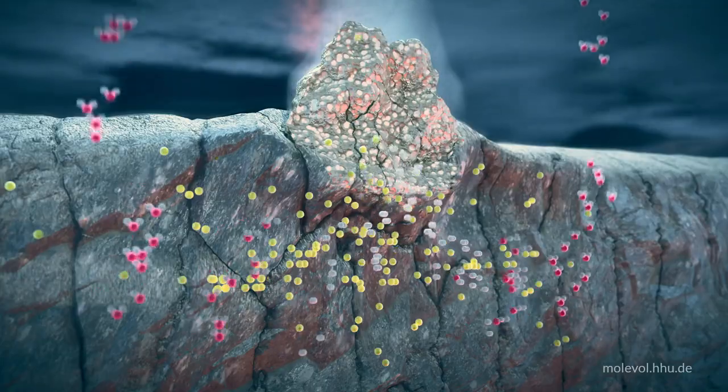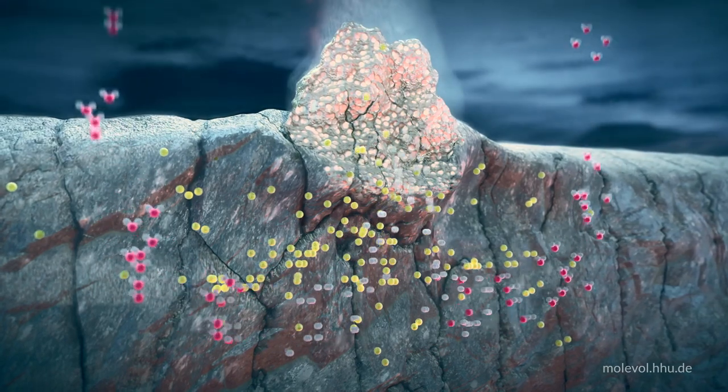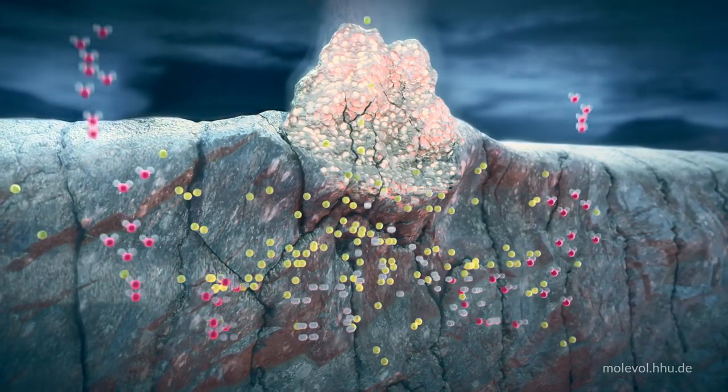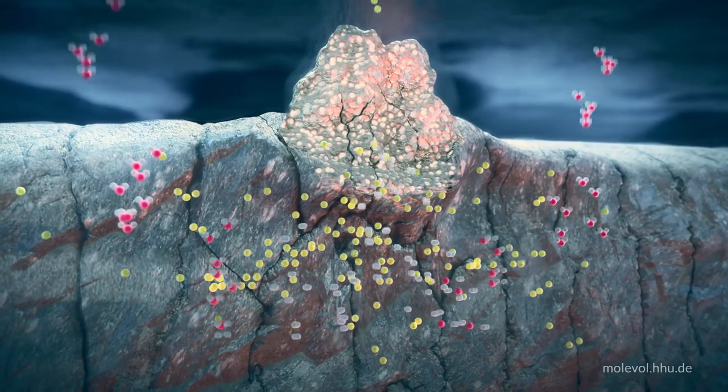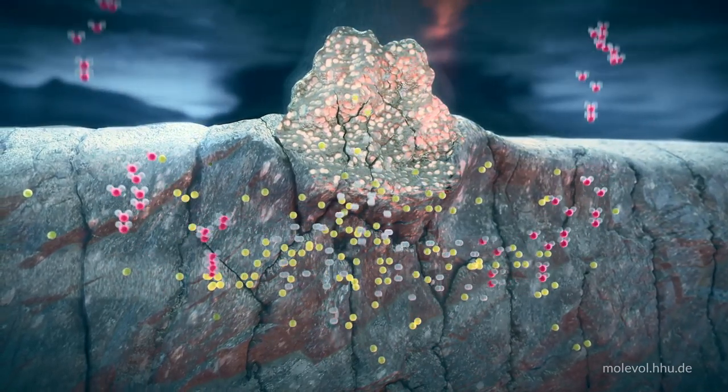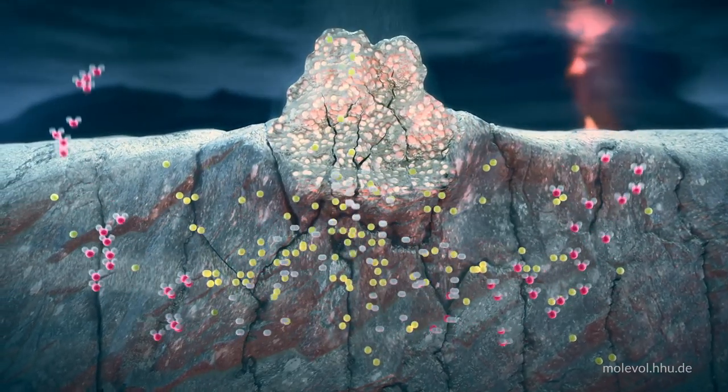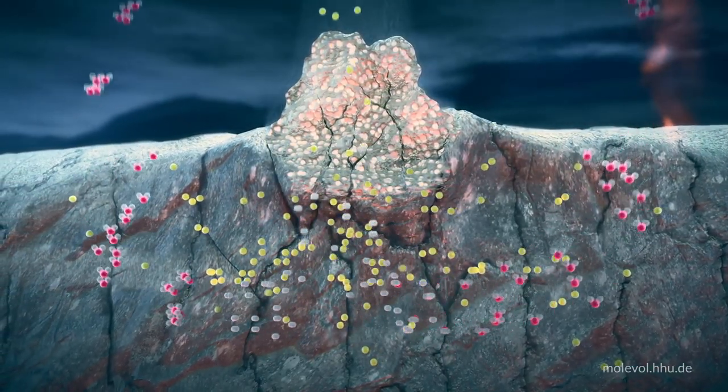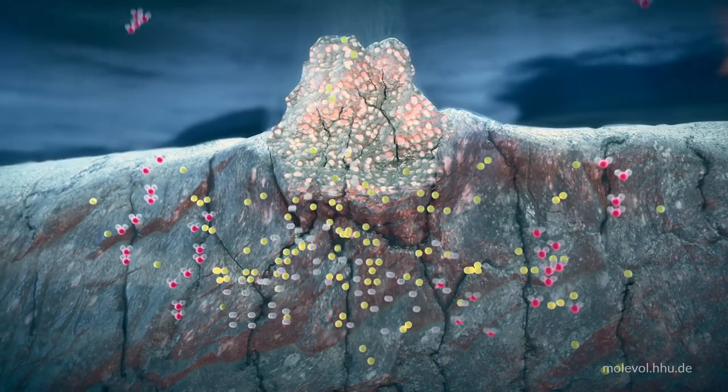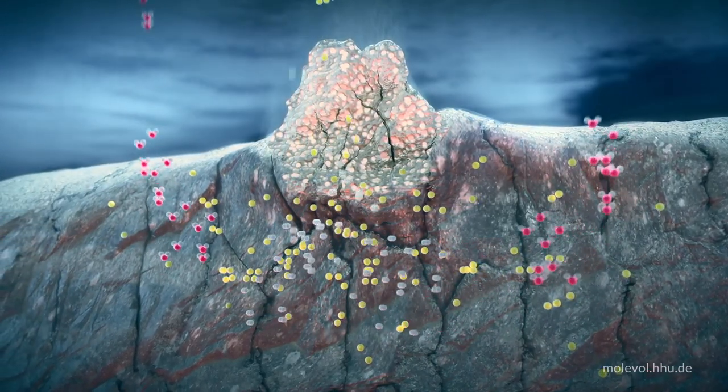If we zoom in, we can see how hydrogen is produced. During serpentinization, the circulating water reacts with reduced iron minerals in the crust. They convert water into molecular hydrogen, shown here as white balls, while the oxygen in water molecules, shown here in red, remains in the crust as iron oxides.